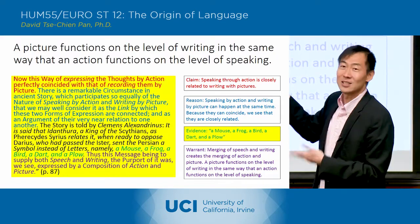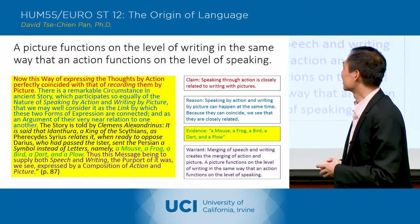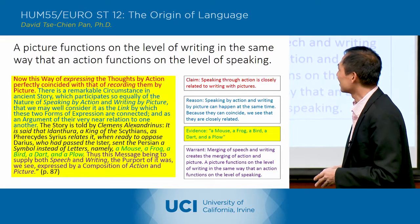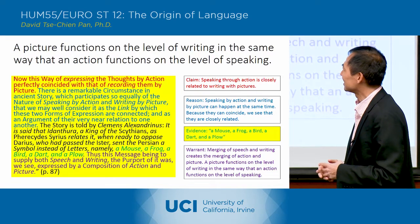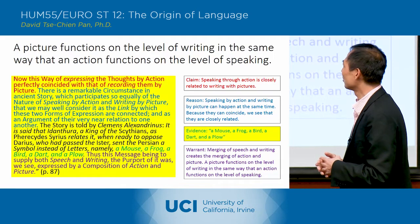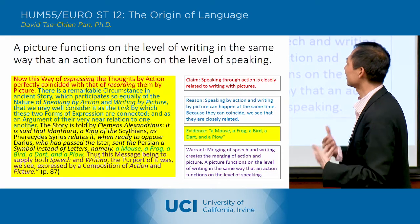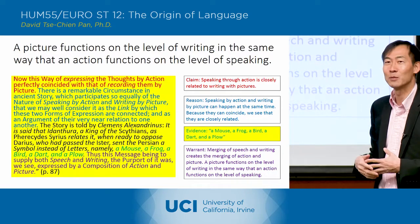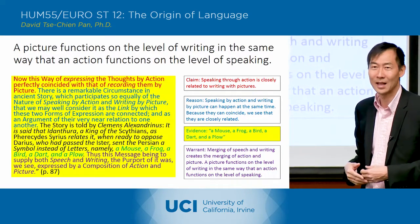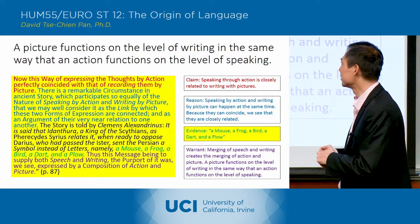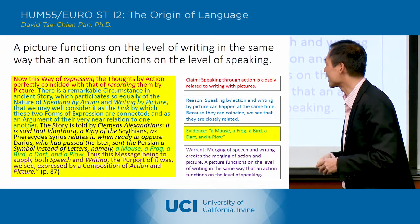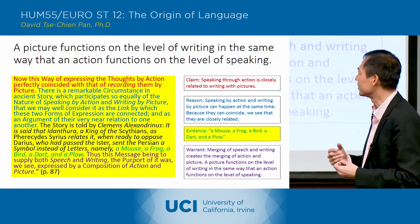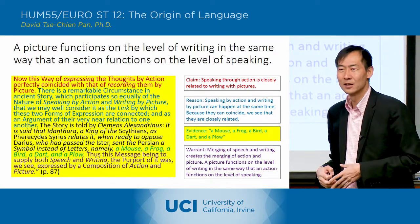Then he tells the story. 'The story is told by Clemens Alexandrinus. It is said that Idanthura, a king of the Scythians, as Pherecydes Syrius relates it, when ready to oppose Darius who had passed the Ister, sent the Persian a symbol of letters — namely, a mouse, a frog, a bird, a dart, and a plow. Thus this message, being to supply both speech and writing, the purport of it was, we see, expressed by a composition of action and picture.'